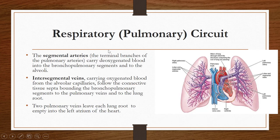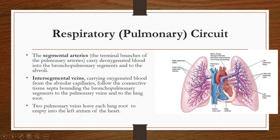Now the respiratory or pulmonary circuit involves blood vessels engaged in gas exchange. These carry deoxygenated blood to the alveoli for oxygenation, then carry oxygenated blood from the alveoli to the heart. There are segmental arteries which are branches of the pulmonary arteries. The pulmonary artery is shown in purple or blue color because it carries deoxygenated blood, which is delivered to the bronchopulmonary segments and alveoli where oxygenation occurs.